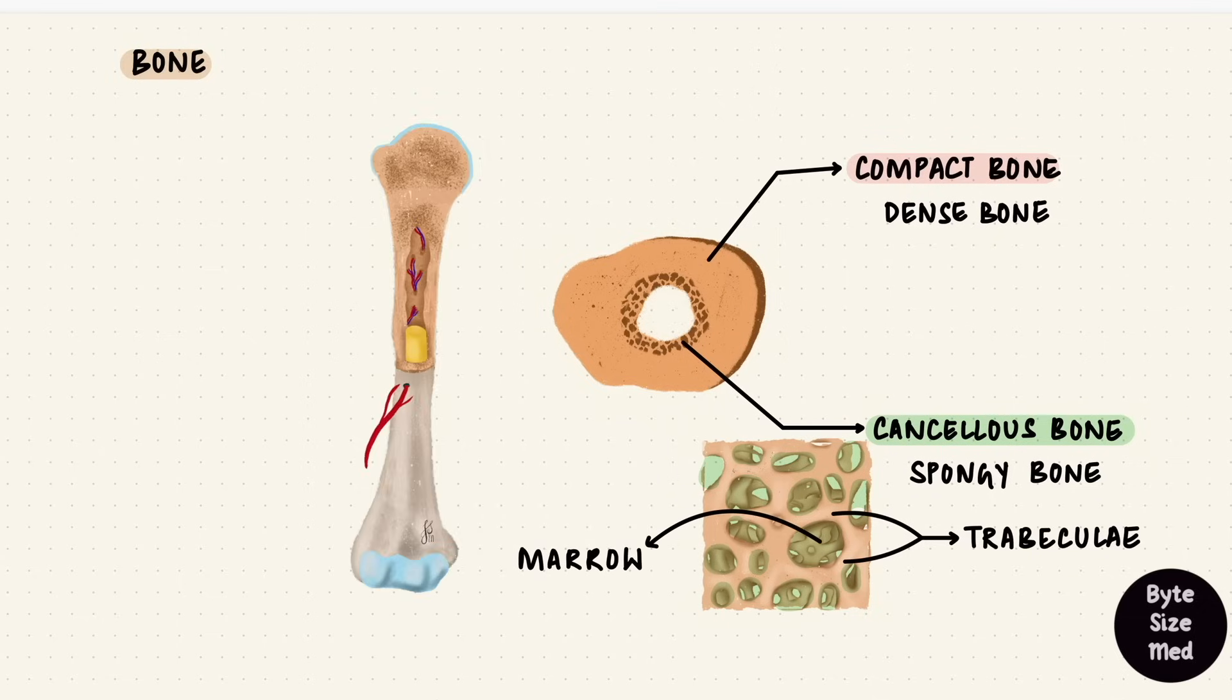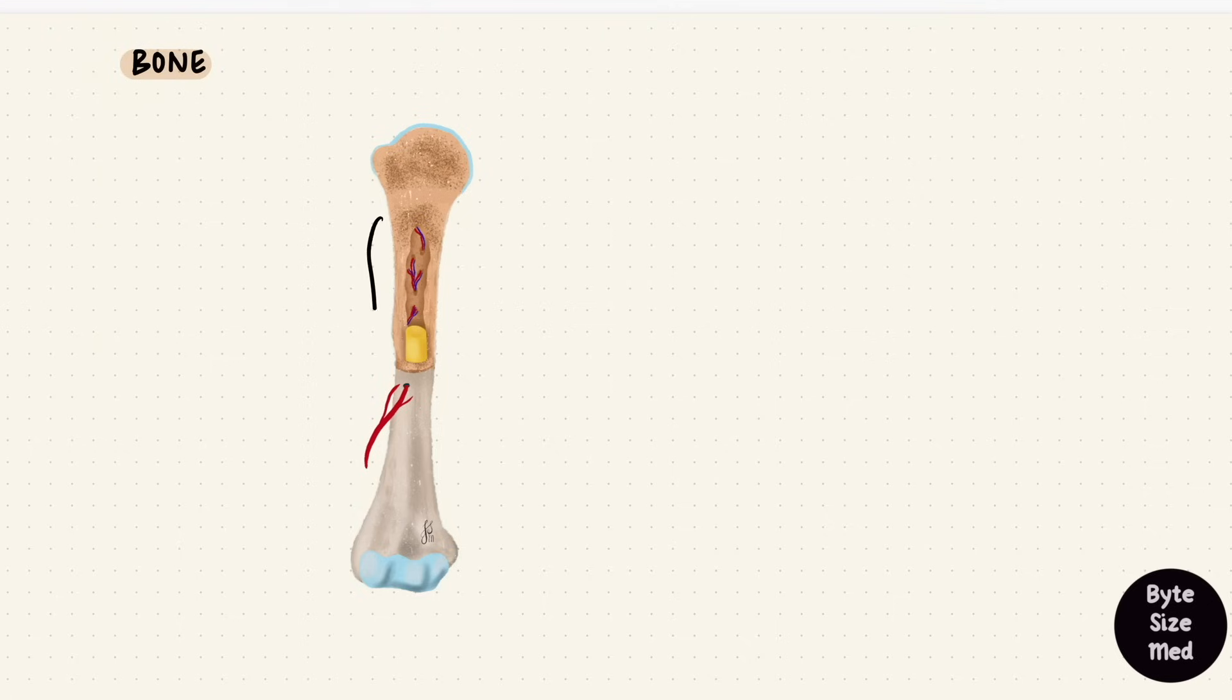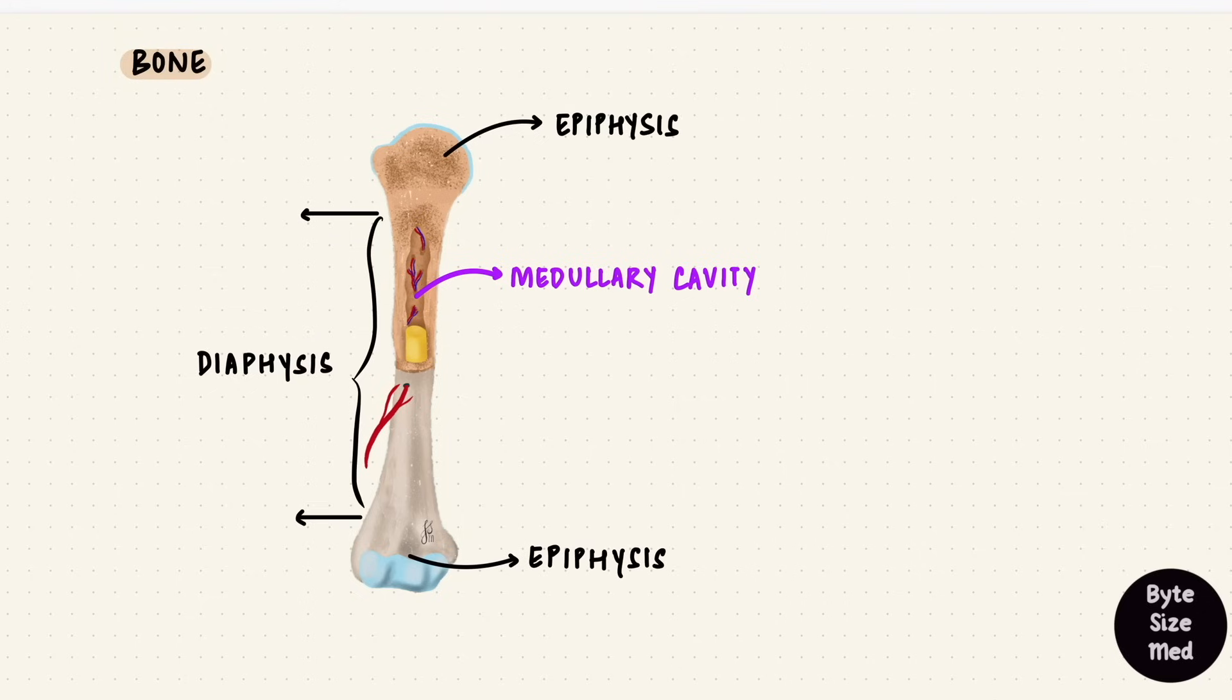This would be if we took a cross-section of the shaft of a long bone. In long bones, the central portion of the shaft that's the diaphysis has a medullary cavity filled with marrow. The ends of the bone are called the epiphyses. The expanded ends of the diaphyses are called the metaphyses.